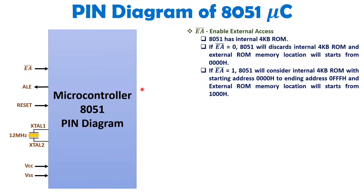If you use EA bar equals 1 to enable internal ROM and also want to interface external ROM, the external ROM addressing must start from 1000h onwards, since 0000h–0FFFh is occupied by internal ROM. At max, 64KB of external ROM can be interfaced with the 8051. When EA bar equals 0, you can start external ROM addressing from 0000h.